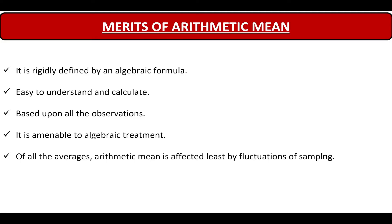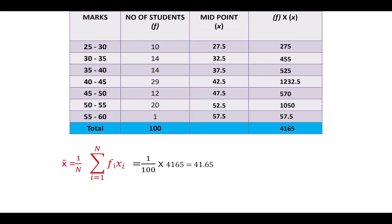Firstly, coming to the merits of arithmetic mean. It is rigidly defined by an algebraic formula. Arithmetic mean is given by summation of all the values divided by the number of values. So, everyone using this formula will get the same answer irrespective of any external factors. That's why we say that arithmetic mean is rigidly defined by an algebraic formula.